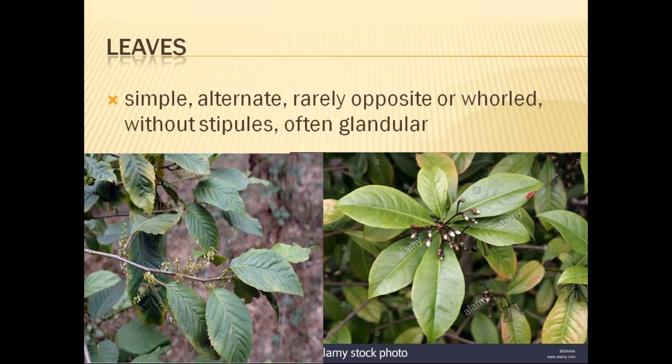The leaves are generally simple, alternate or opposite, without stipules and often glandular. Glandular dots are present on the dorsiventral surface of the leaf. Some glandular structure is present — this is one of the prominent features of this family. Another important characteristic of the leaves is that they are generally coriaceous.